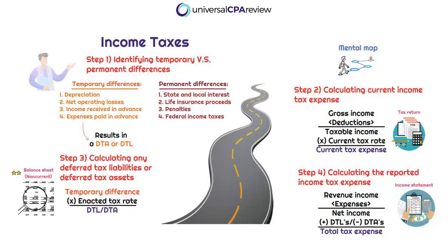Step one in our mental map is going to be determining any of the temporary and permanent differences. This ultimately is going to lead to our deferred tax liability or our deferred tax assets. Permanent differences will never lead to a DTA or a DTL. If we notice a discrepancy between the taxable income amount and the amount reported as net income on the income statement, we need to identify the reason for that discrepancy — was it due to a temporary difference or a permanent difference?